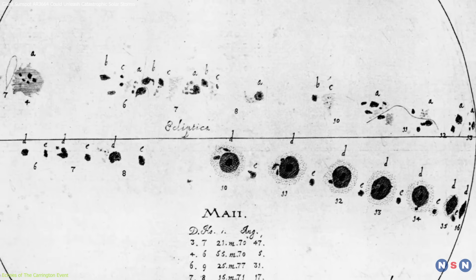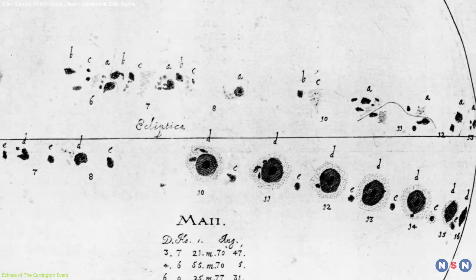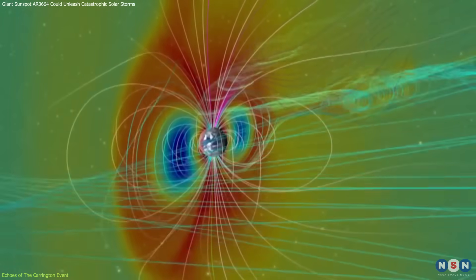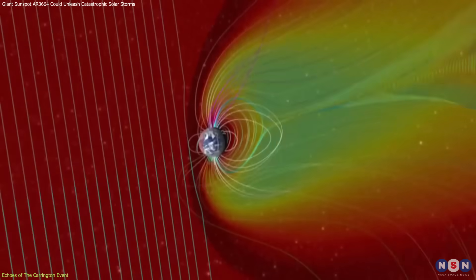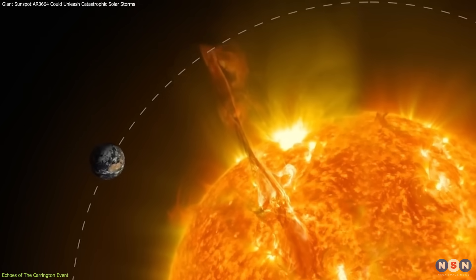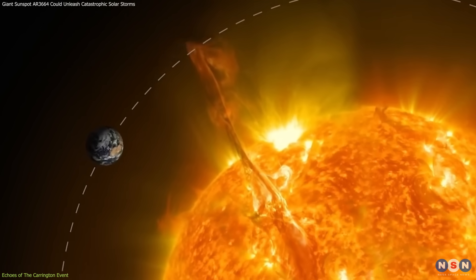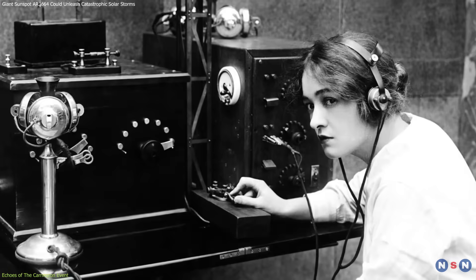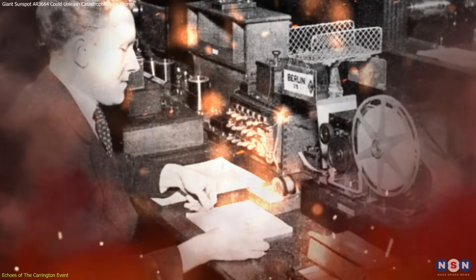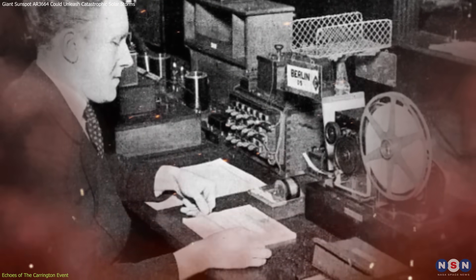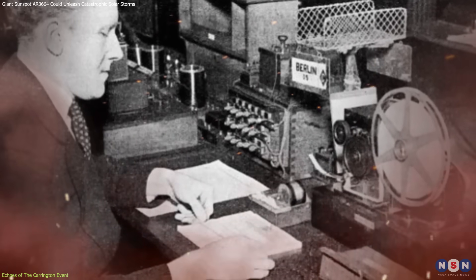When Carrington observed the flare that bears his name, it took less than 18 hours for the resultant geomagnetic storm to reach Earth, highlighting the speed and impact of solar ejections. Telegraph systems across Europe and North America failed, with operators reporting sparks leaping from their equipment, some severe enough to start fires.